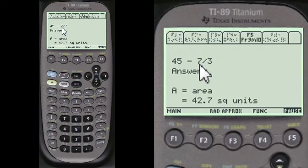So upper minus lower, 45 minus 7 thirds equals the area equals 42.7 square units. Remember, an integral will always give you the area under a curve. And so here I always like to put square units in there. Alright, have a good one.